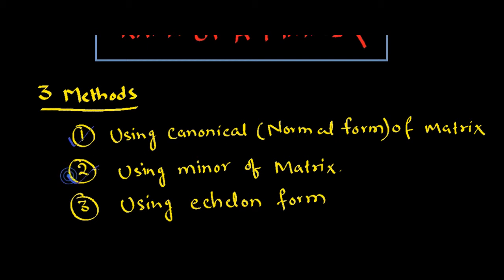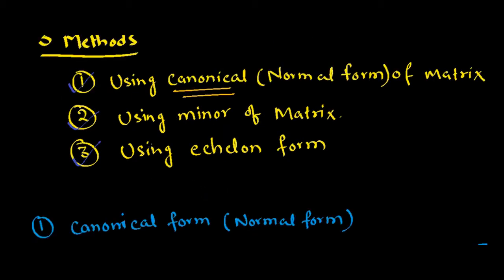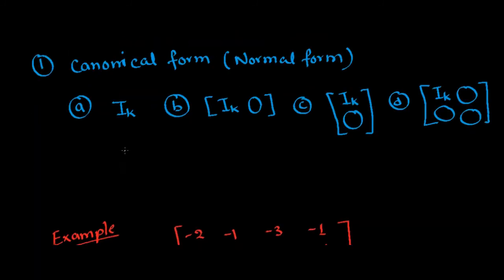The second one is by using the minor of the matrix. And the third one is by using the Echelon form of the matrix. We will try to understand the whole working by using a simple example. Let's start with the first method — by using canonical form.